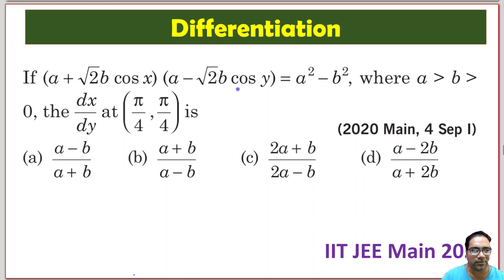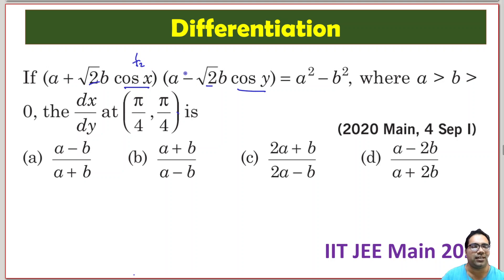We have cos x and cos y, and at π/4, cos(π/4) is 1/√2. There is a √2 here and a √2 here, so most likely this √2 and 1/√2 will get cancelled. We just need to differentiate this.